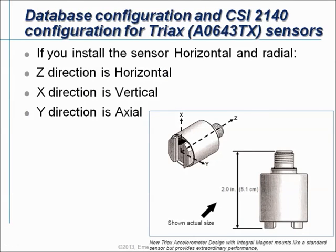If you work with a Triax sensor, you can use it in different methods and you can also install it in different directions. In this video tutorial we will focus on one practical case where we will install the Triax sensor always in horizontal direction and in radial direction on the machines. If you are using the CSI Triax sensor AO643TX, you see an image here of the Triax sensor. It has an embedded magnet. The Z direction is our horizontal reading, the X direction is a vertical reading, and the Y direction is an axial reading.